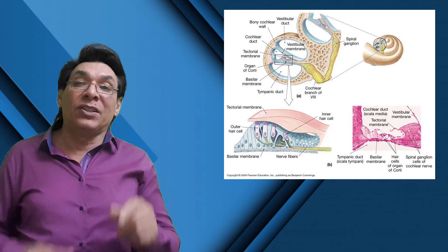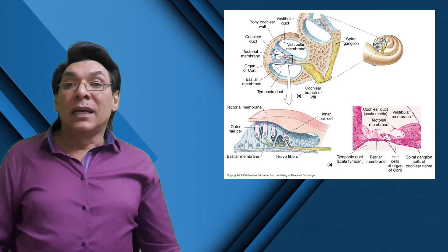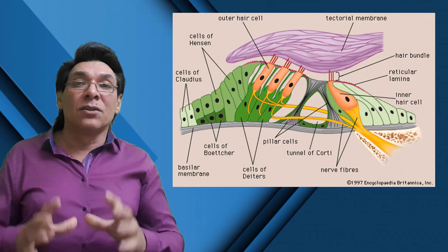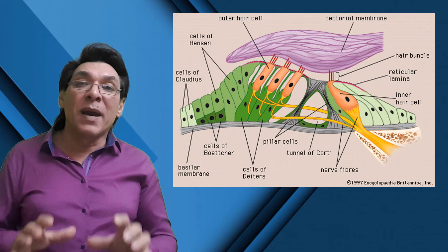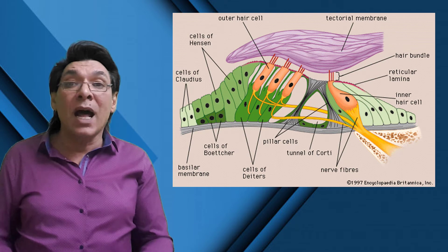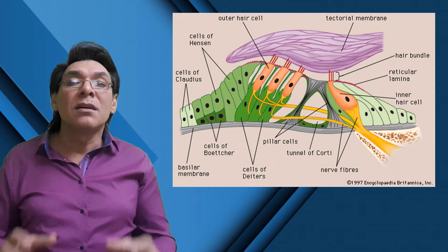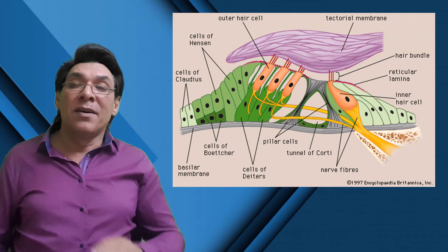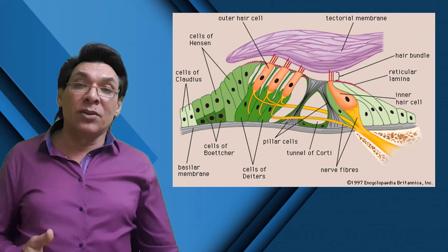The organ of Corti is located on the upper surface of the basilar membrane. The hearing receptor cells are located on the organ of Corti — these are hair cells covered by a tectorial membrane. These receptors are mechanoreceptors.